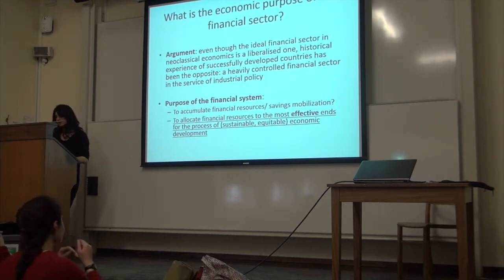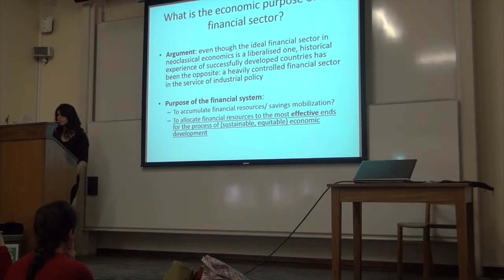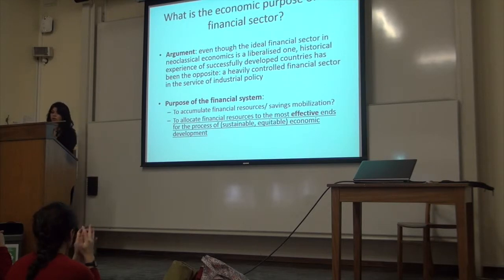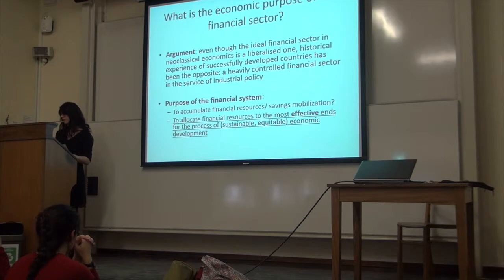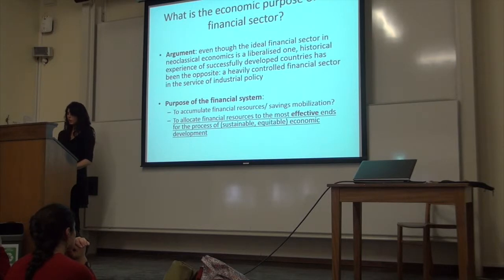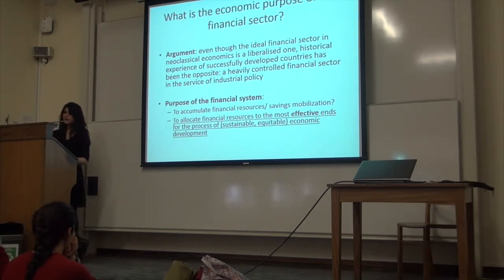Instead, I'm going to focus on the second role of the financial sector: the allocation of resources. The role of the financial sector is to allocate resources to the most effective — and notice I don't say 'efficient' — uses for the purposes of economic growth or development. This is a vague statement and doesn't specify the types of financial structure or institutions that are desirable — that debate will be the subject of this lecture. The type of financial system we have can either disrupt or support the allocation of resources in order to create economic growth.